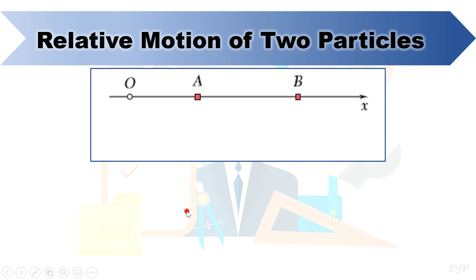Consider this figure as our basis for the formulas. As you can see here, we have two particles denoted by A and B moving along a straight path, and our reference point is at point O. As particle A moves, we can represent its position as x sub A. In the same way, for particle B, we can denote its position by x sub B.